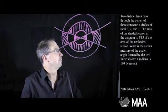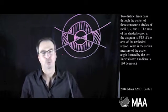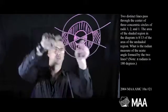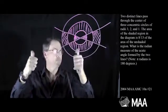Two distinct lines pass through the centre of three concentric circles of radii 3, 2 and 1. Two lines through the centre of three concentric circles. Radius 1, radius 2, radius 3. Got it.